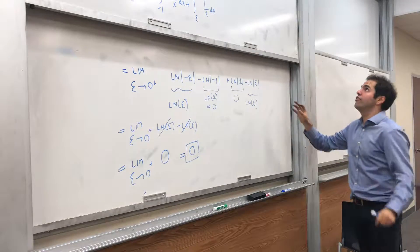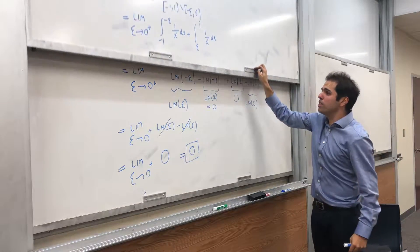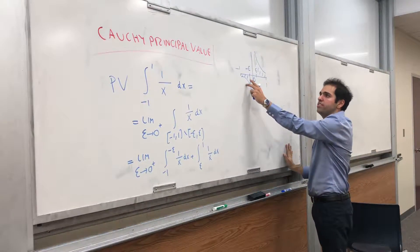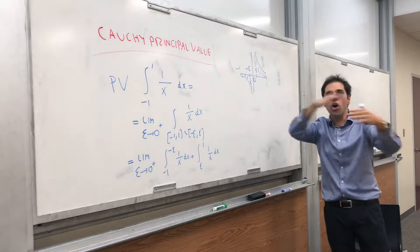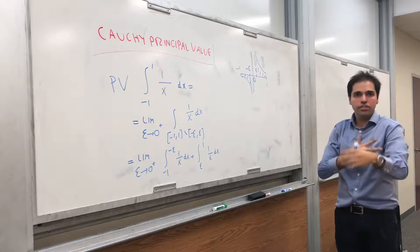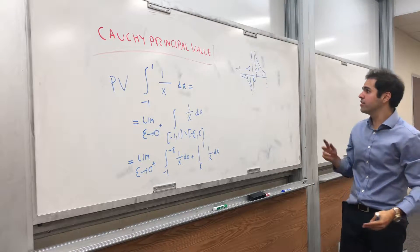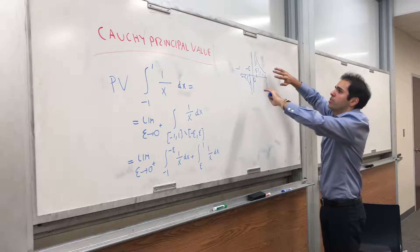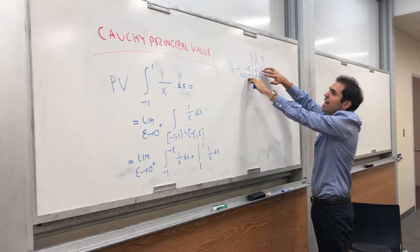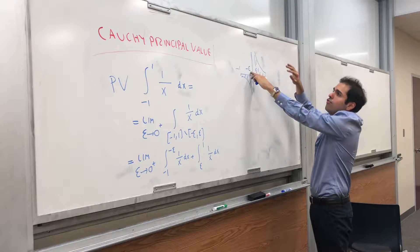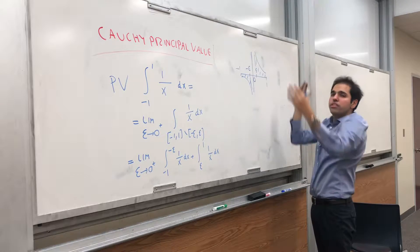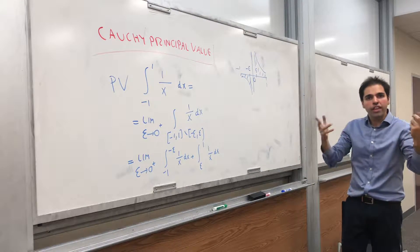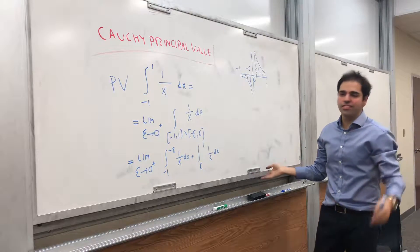And you see the two different approaches. Before, we just said, well, one piece is negative infinity, the other one is infinity. We don't know how they cancel out, so we said that it diverges. Here, it's a bit more subtle. Here, we say, hey, they actually cancel out. So for finite epsilon, each piece is 0, and if you take epsilon go to 0, that quantity that's canceled out is still 0.